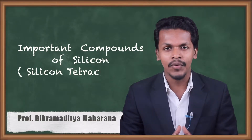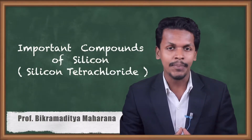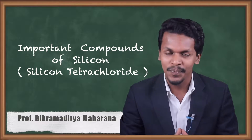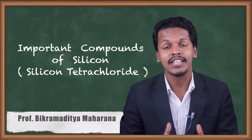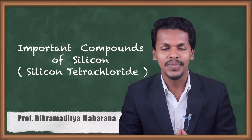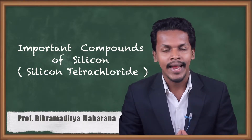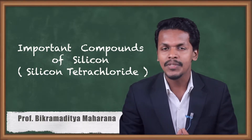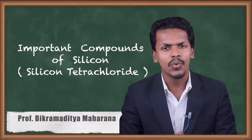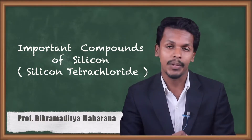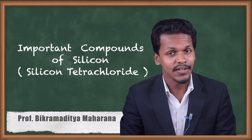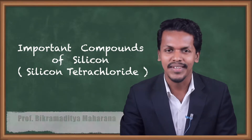Hello friends. In the previous lecture we got to know about an important compound of silicon, which was silicon dioxide (SiO₂). We discussed its various properties and structure. Now we are going to talk about the second compound: silicon tetrachloride — what it is, how we can prepare it, and what different properties it can exhibit.